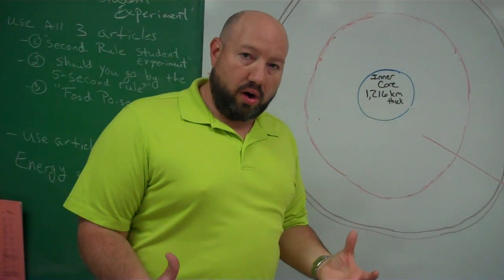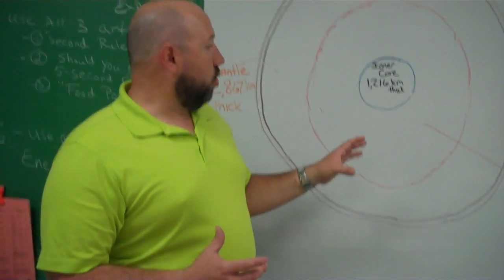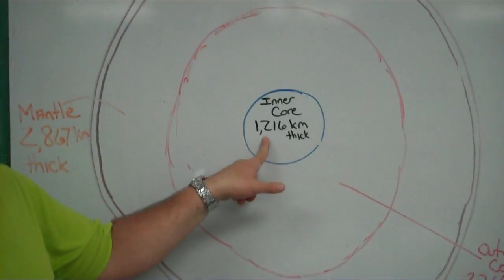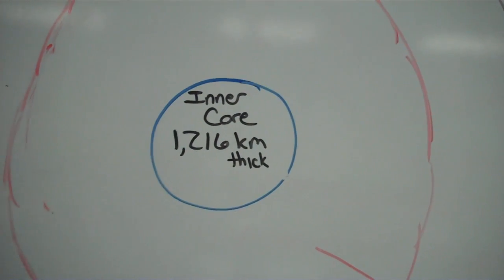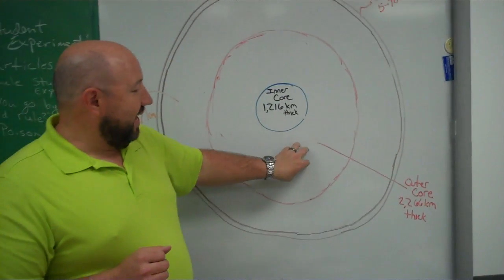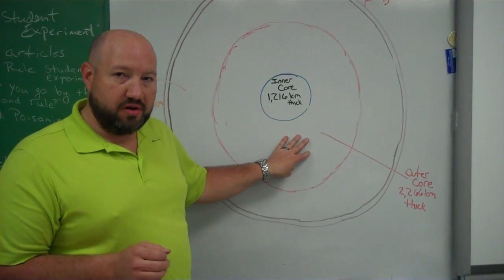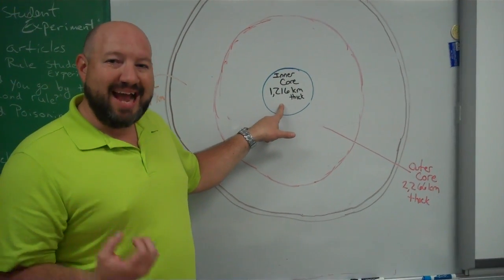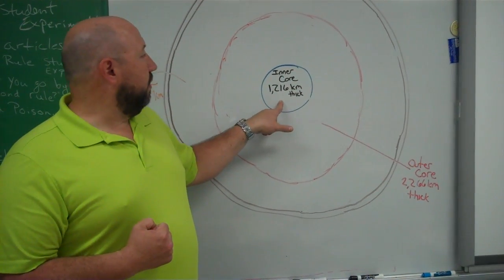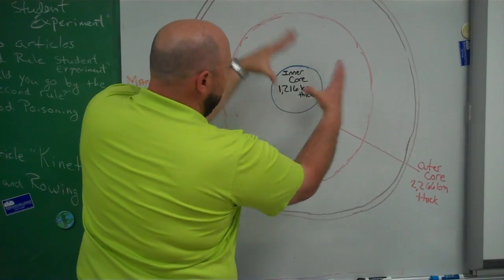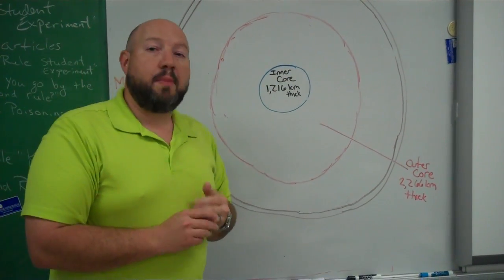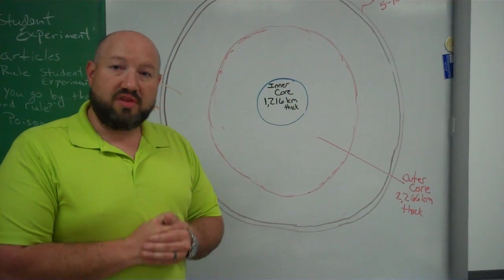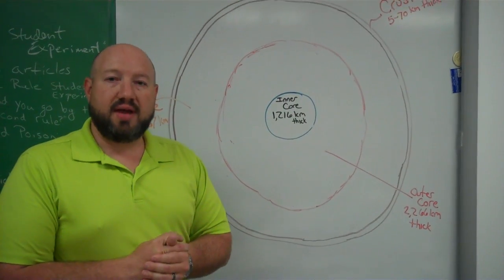Beneath the mantle, we have what's called the core — a very hot area. We have two cores: an outer core, which is about 2,266 kilometers thick, and an inner core, about 1,200 kilometers thick. The outer core is actually liquid because of the extreme temperatures. The inner core, however, should also be liquid at such high temperatures, but it's actually a very dense, solid metal because of the pressure — essentially the weight of the world pushing down on it from all sides. Both cores are predominantly iron and nickel, which is why we have a magnetic field and our North and South Poles.